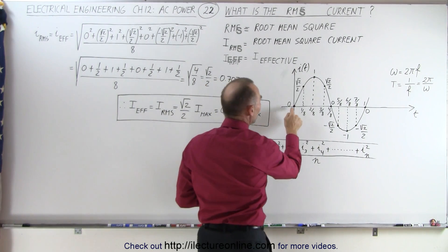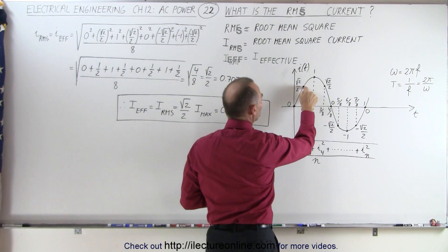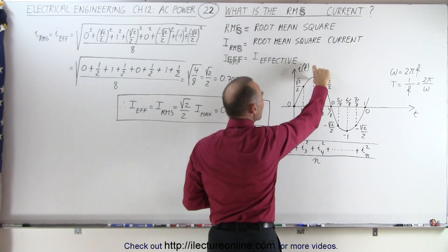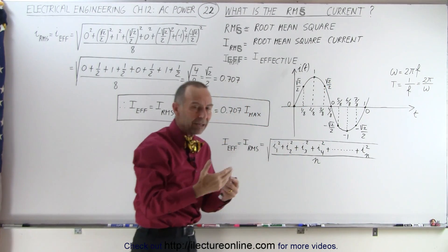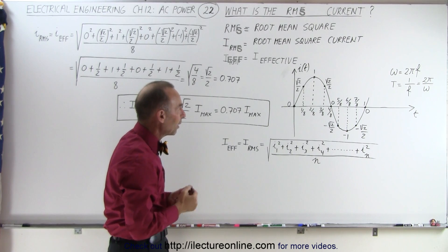And at each point, we're going to figure out what the current value is, where 1 is the maximum current. So I here, or I_max, maximum current is represented by 1.